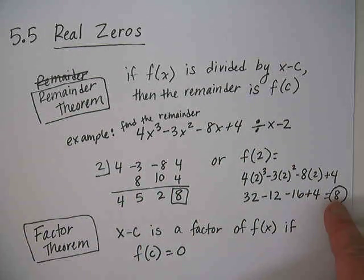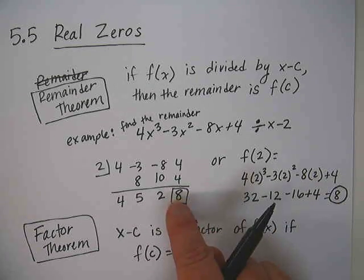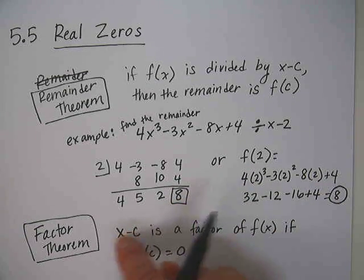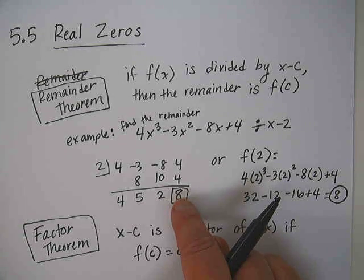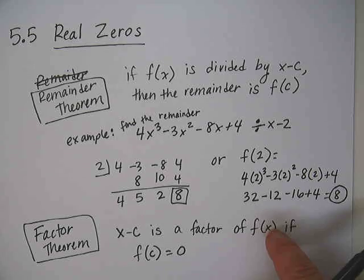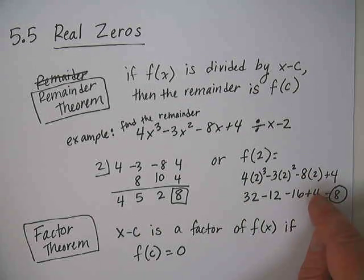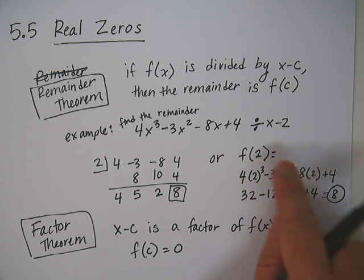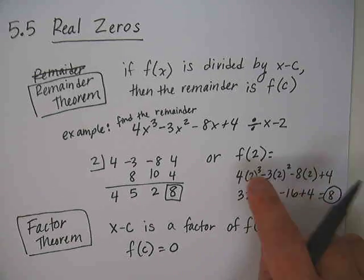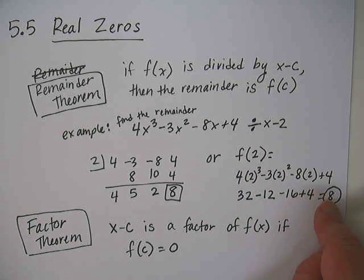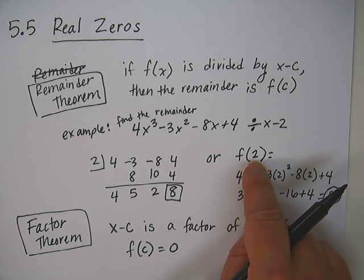Well, based on the theorem we just learned that says synthetic division remainder and plugging in a number get the same answer, well, if a binomial is a factor, then the remainder will be 0 because it divides in evenly. So if you take that number and you plug it into the function itself, your answer should be 0. You're plugging in an x value, you're getting a y value of 0.